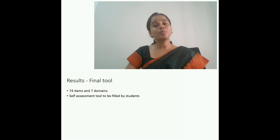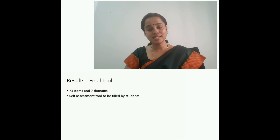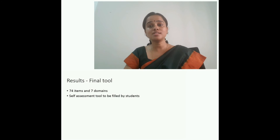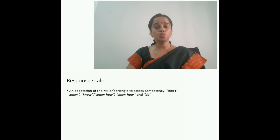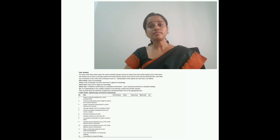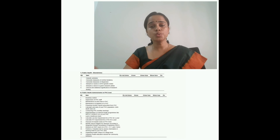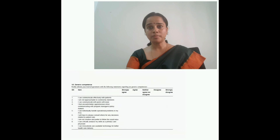At the end of three rounds, we were left with our final tool, which had 74 items grouped under seven domains. It is a self-assessment tool where the student rates himself or herself. These are the seven domains that constitute our final tool. The rating scale is modeled after Miller's triangle. Our final tool looks like this — the items grouped under seven domains.